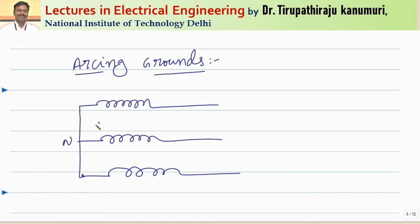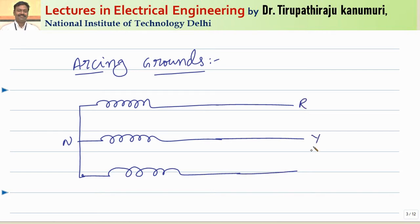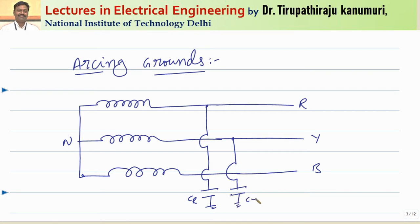So let us assume this is a neutral point. These are the three windings of a generator or an alternator. In a transmission line, there will be capacitance formed between each phase and the ground. Let us assume these are my three phases R, Y, B. The capacitance formed between the R phase and ground I am representing by CR, the capacitance formed between Y phase to ground as CY, and the capacitance formed between the B phase to ground as CB.